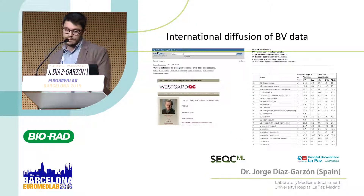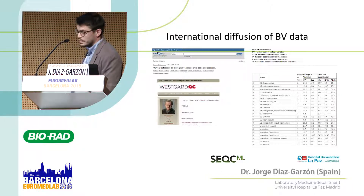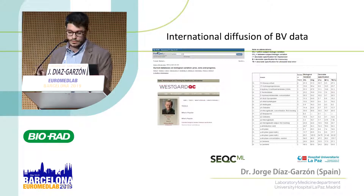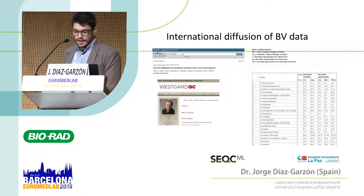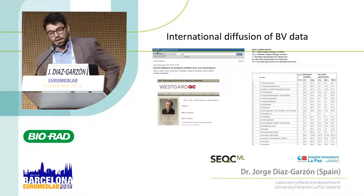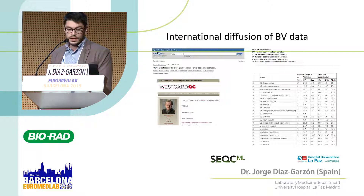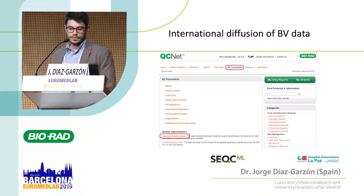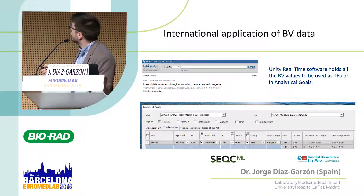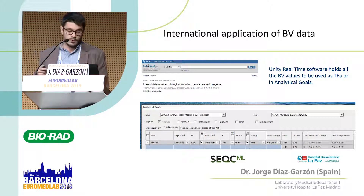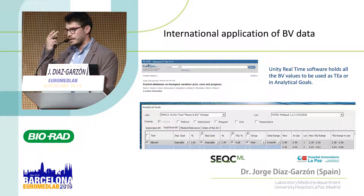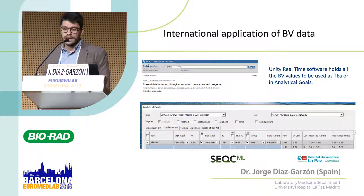In the table, from left to right, you can see the matrix, the number of measurements, the number of papers included per magnitude, the within- and between-subject biological variation estimates, and the desirable specifications derived from those estimates. This database is available on QCNet, which is the Bio-Rad website, and also in software for internal quality control in real time. Here we can set analytical performance specifications based on biological variation: total error, imprecision, and we can also manually introduce state-of-the-art specifications.